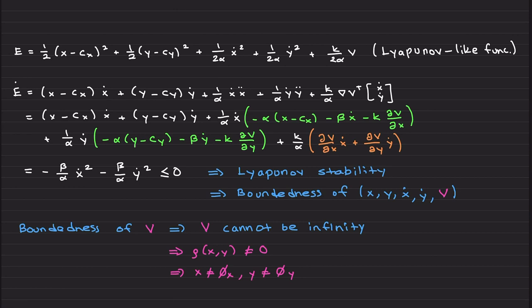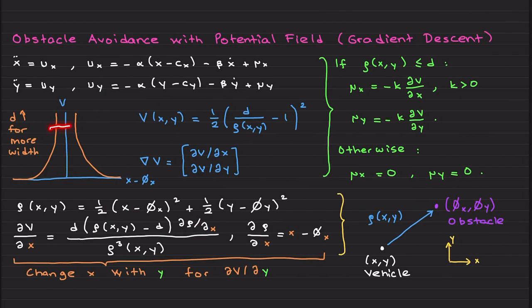Meaning that V is bounded. When V is bounded, as I mentioned, we can avoid x minus φx approaching zero, such that x can never touch the obstacle. Likewise, y cannot touch the obstacle's position in the y direction.